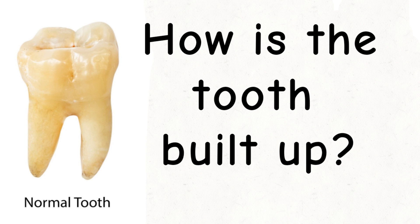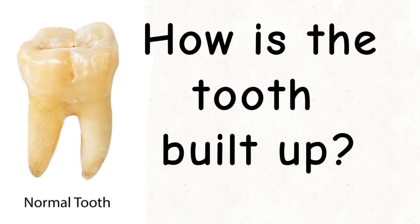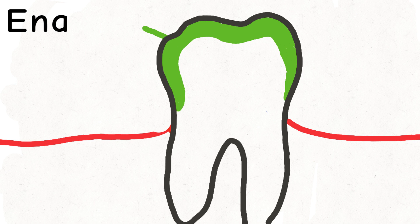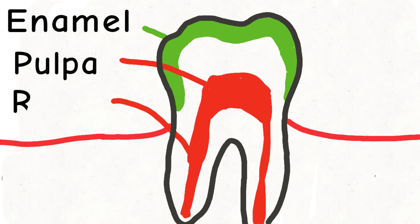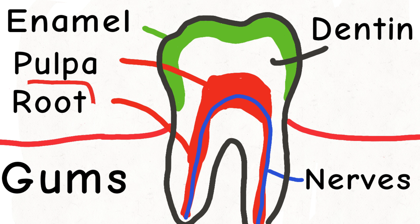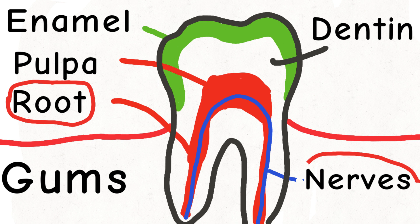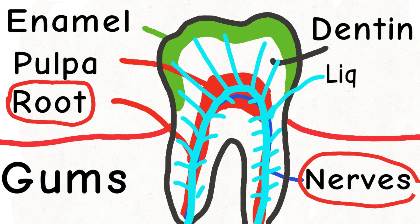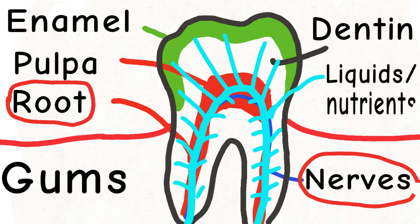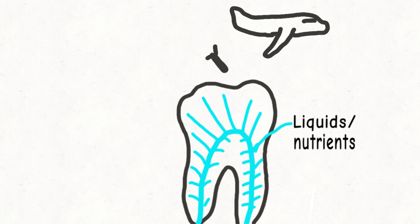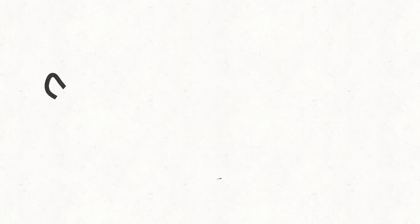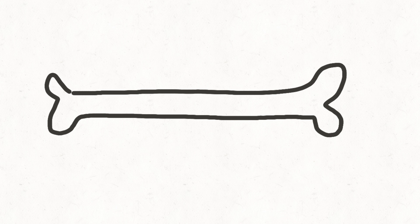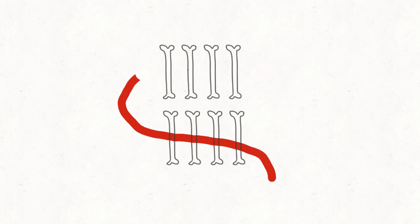So first we got to understand how the tooth is actually built up. The tooth is consisting of several layers. Inside the tooth is something called the root canal. That's where we get the word root canal treatment. And in the root canal, there's nerves and there's also liquids being fed to the tooth. And this is what is building up your tooth as it is being broken down from the outside. This means that your tooth is not just a piece of bone jutting out in your mouth, a dead thing.